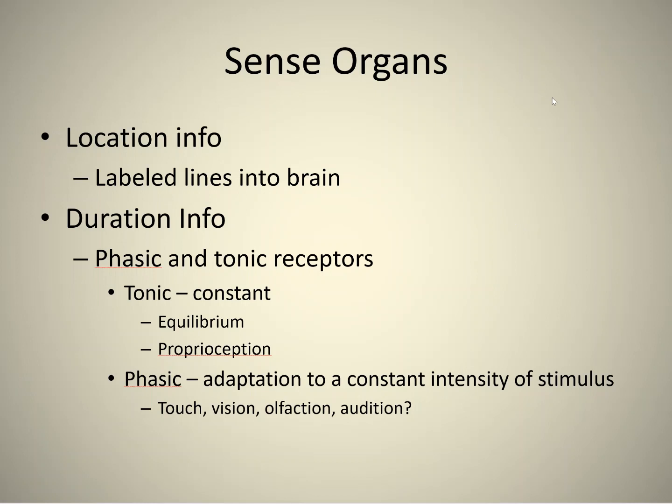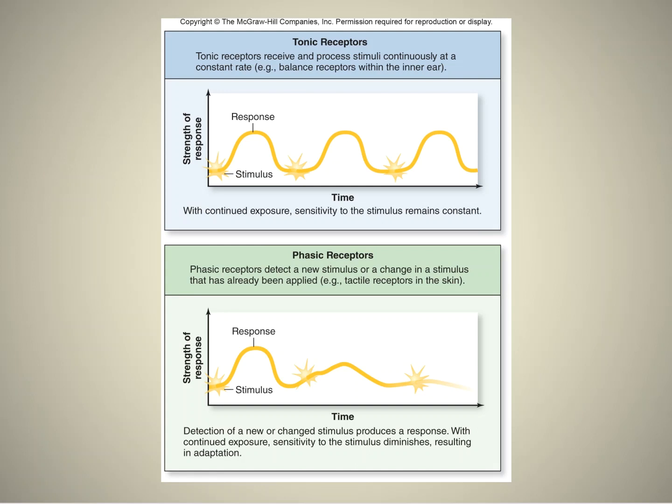This is what we've talked about before — what is your brain most interested in? Sensory information that's changing. If it's not changing, a lot of times it's not important. So we can look at touch, vision, olfaction, and possibly even audition. Slide six shows this graphically: with tonic receptors, the stimulus remains constant no matter what. Versus phasic, you first feel the response, and if it doesn't change, the sensation gets less and less and less with time until you won't even detect it anymore.